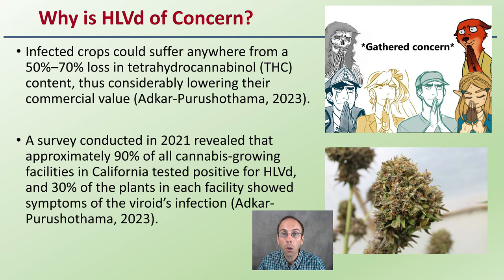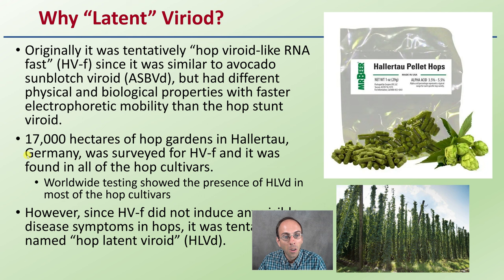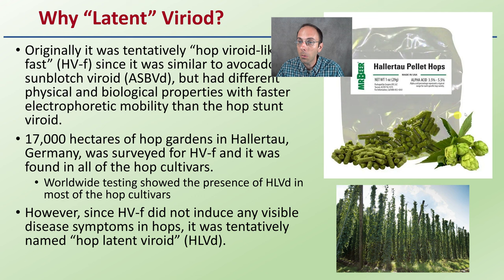So why is it called a 'latent' viroid? Originally it was tentatively named Hop Viroid-like RNA-Fast, since it is similar to avocado sunblotch viroid but had different physical and biological properties with faster electrophoretic mobility than the Hop Stunt Viroid. 17,000 hectares of hop gardens in Germany were surveyed for this Hop Viroid-like RNA-Fast, and it was found in all hop cultivars. Worldwide testing showed the presence of Hop Latent Viroid in most hop cultivars. Since it did not induce any visible disease symptoms — at least in hops — it was tentatively named Hop Latent Viroid.